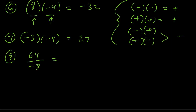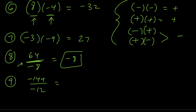For number 8, 64 divided by negative 8 — did you get negative 8? A positive divided by a negative gives us a negative. Remember, when you see a fraction bar, that's the same as a division sign. For number 9, negative 144 divided by negative 12 — did you get positive 12? 144 divided by 12 is 12, and a negative divided by a negative gives us a positive number.